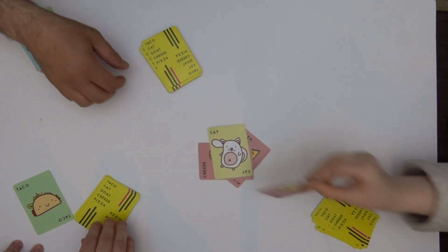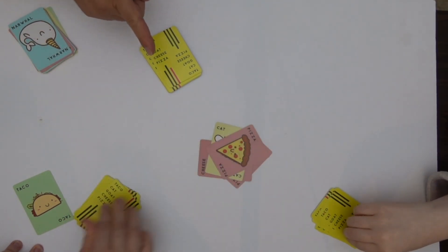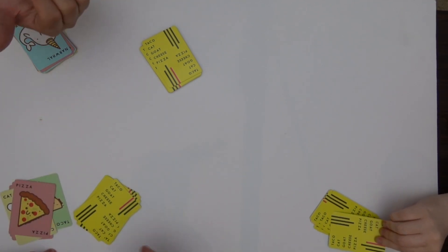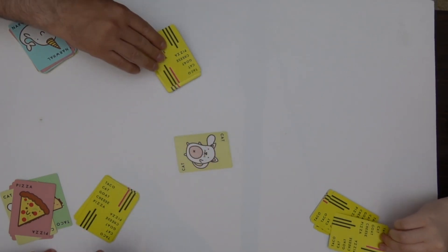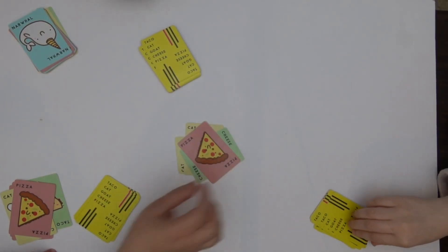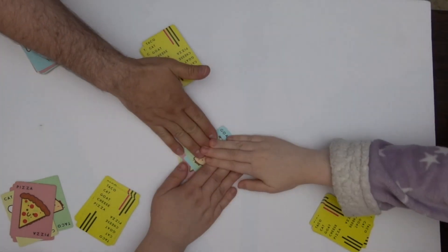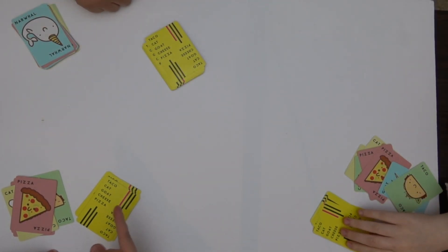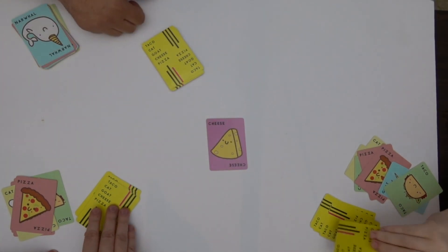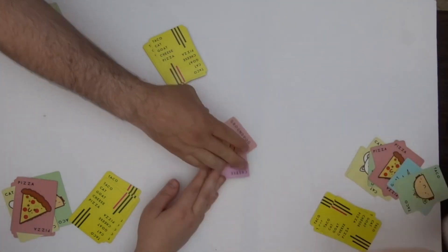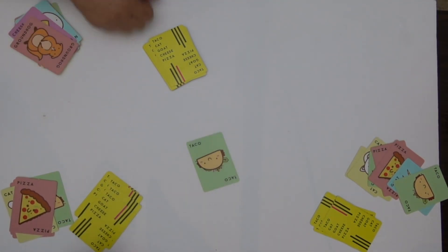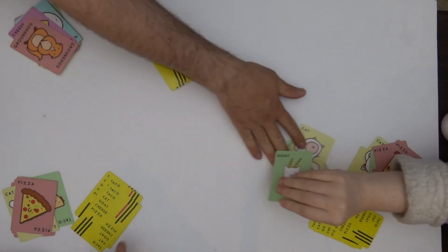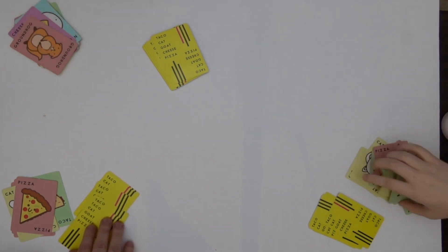This game's becoming more fun. Cheese, pizza, taco, cat. Dude, cut your nails! I'm apparently the injurious one. Where were we? Pizza, taco. Taco, taco, taco. Cat, goat, cheese. You flinched!